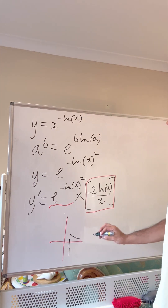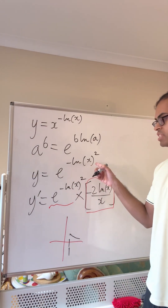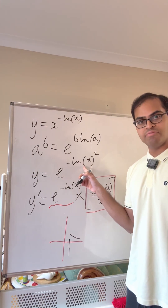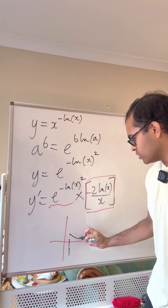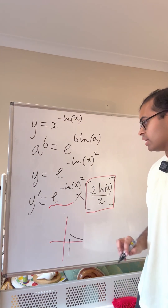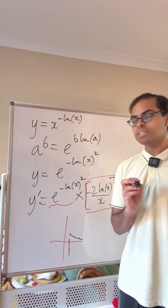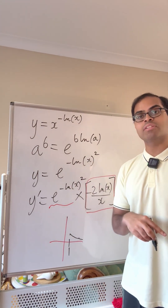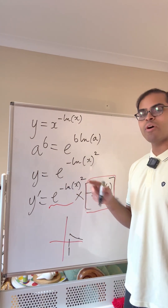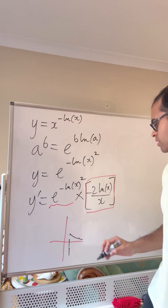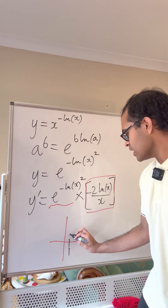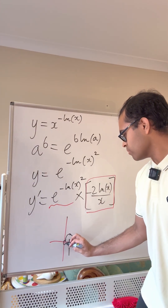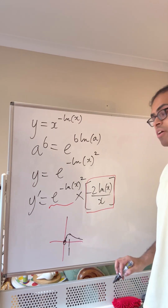As x approaches infinity, log x approaches infinity, so y approaches e to the minus infinity, which is 0. As x approaches 0, log x approaches negative infinity, so (log x) squared approaches infinity, and again y approaches e to the minus infinity, which is 0. So we get a bell-shaped curve that rises to a maximum at x equals 1 and approaches 0 on both sides.